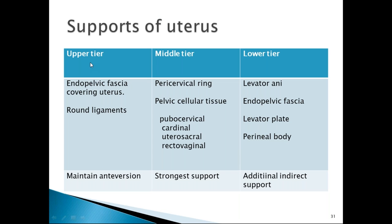Uterine supports are divided into three tiers. The upper tier does not give much support but maintains anteversion; it is composed of round ligaments, broad ligaments, and the surrounding pelvic fascia. The middle tier gives the strongest support and constitutes a pericervical ring composed of pubocervical fascia, cardinal ligaments, uterosacral ligaments, and rectovaginal fascia. The lower tier is maintained by the levator ani muscle with endopelvic fascia, posteriorly by the levator plate, and perineal body.